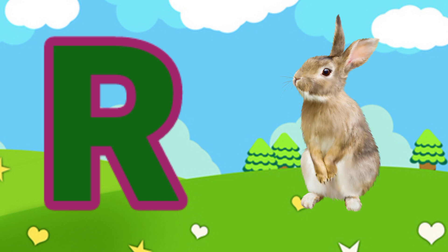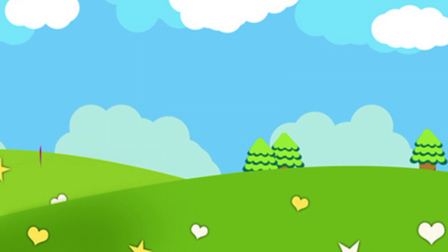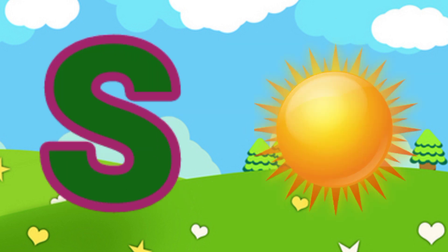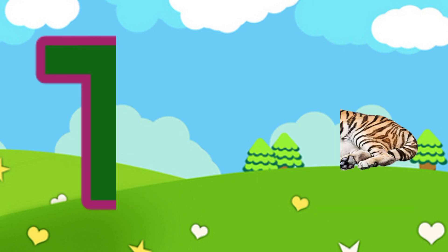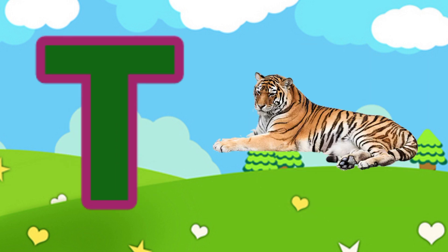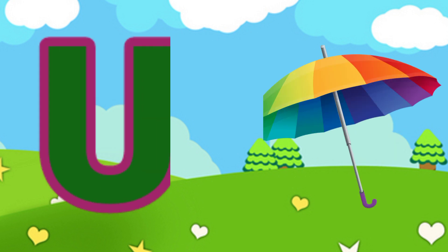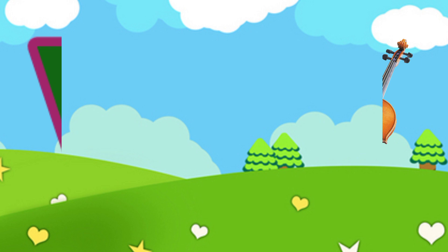R for rabbit, S for sun, T for tiger, U for umbrella.